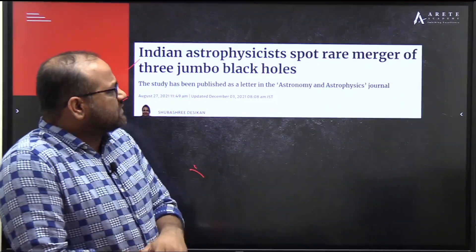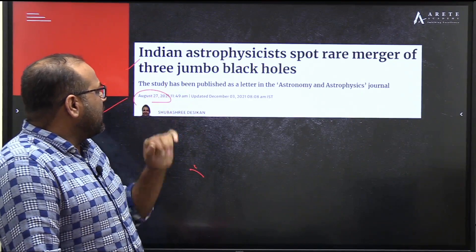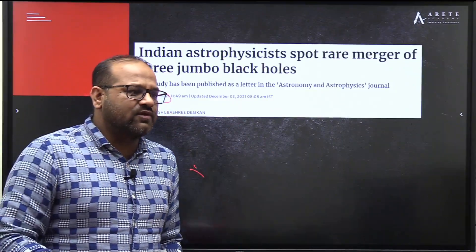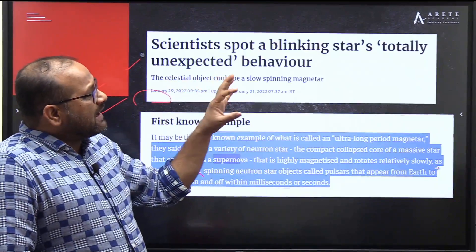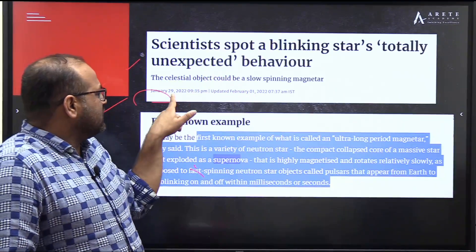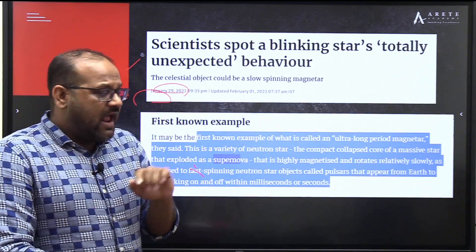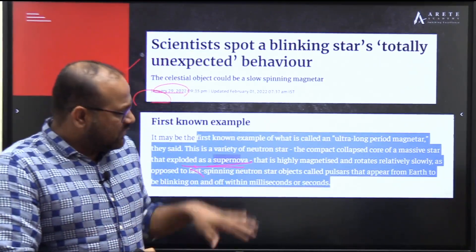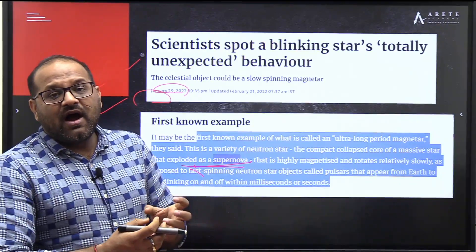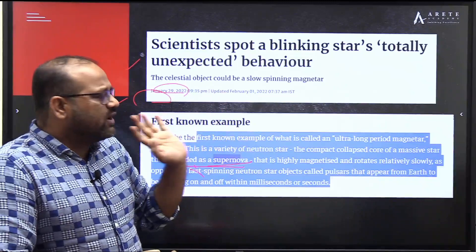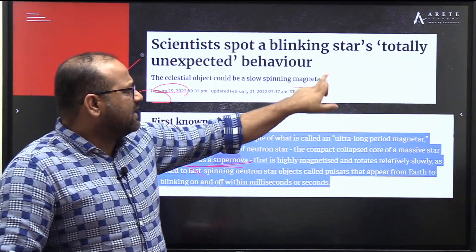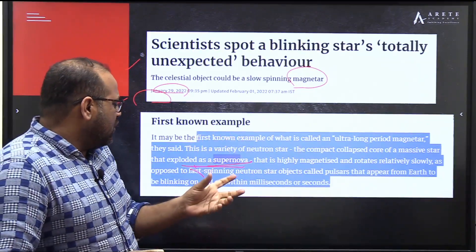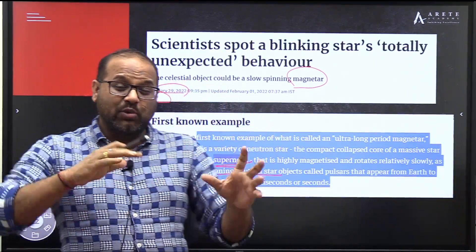An Indian astrophysicist spotted a rare merger of three jumbo black holes - this was in 2021 - and NASA's website covered the merger of two black holes in January 2022. Scientists also spotted a blinking star with totally unexpected behavior in January 2022, which relates to a supernova. That third option refers to a magnetar - a highly magnetized star that rotates relatively slowly, as opposed to fast-spinning neutron stars or pulsars.